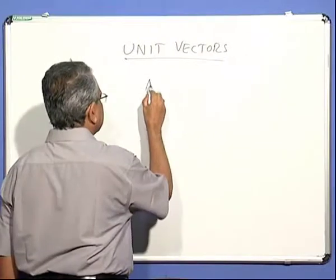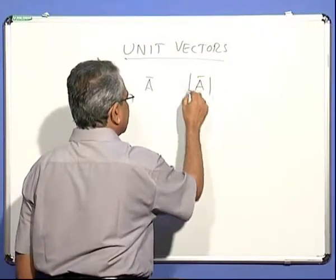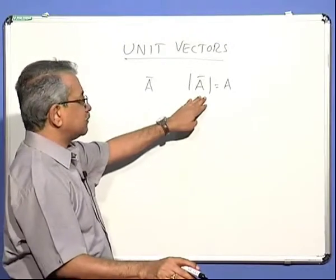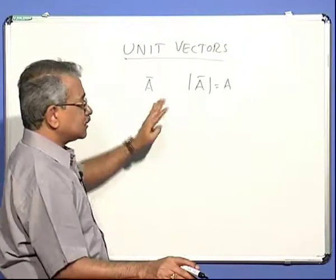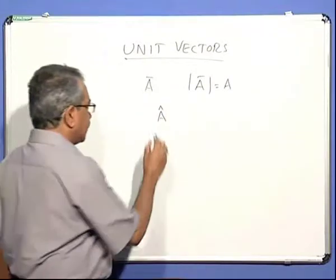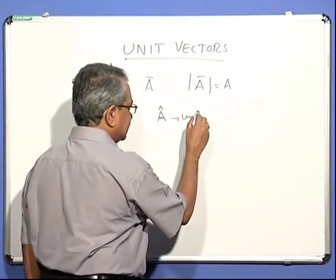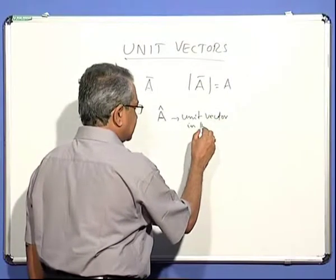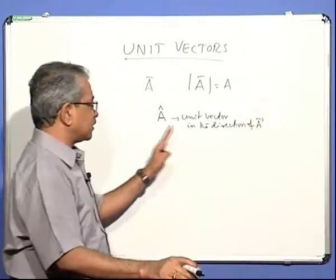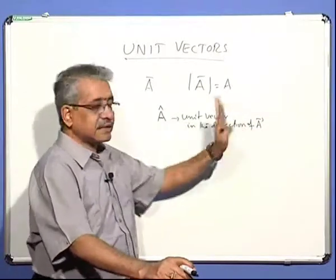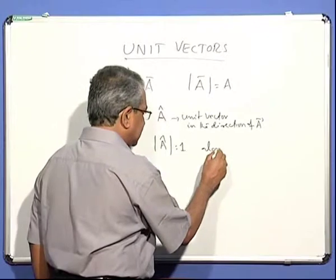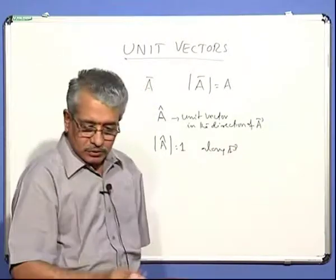If you take a vector A, it has a magnitude given by |A|. Then what about direction? We represent the direction as 'A-cap' (â). A-cap is the unit vector in the direction of A. That means A-cap has magnitude equal to 1, along the direction of A. So a vector A can be represented as its magnitude |A| multiplied by the unit vector â — magnitude is shown separately, and direction is given by the unit vector.